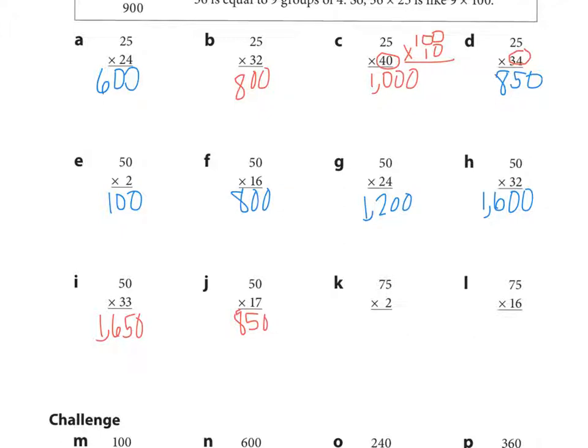K, 75 times two. I think 75 doubled, which is 150. L, 75 times 16. So here I can think what is one fourth of 16 is four. Four times four is 16. And so now what's three fourths of 16 would be 12. And so I think 12 times 100 is 1200.